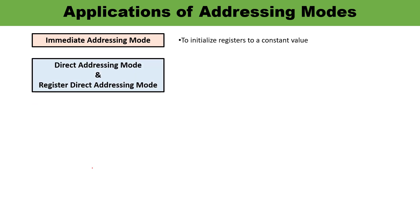If we talk about direct addressing mode and register direct addressing mode, the operands are in registers residing within the CPU. The particular register is selected with the register field of the instruction. These two addressing modes are used to access static data or to implement variables.